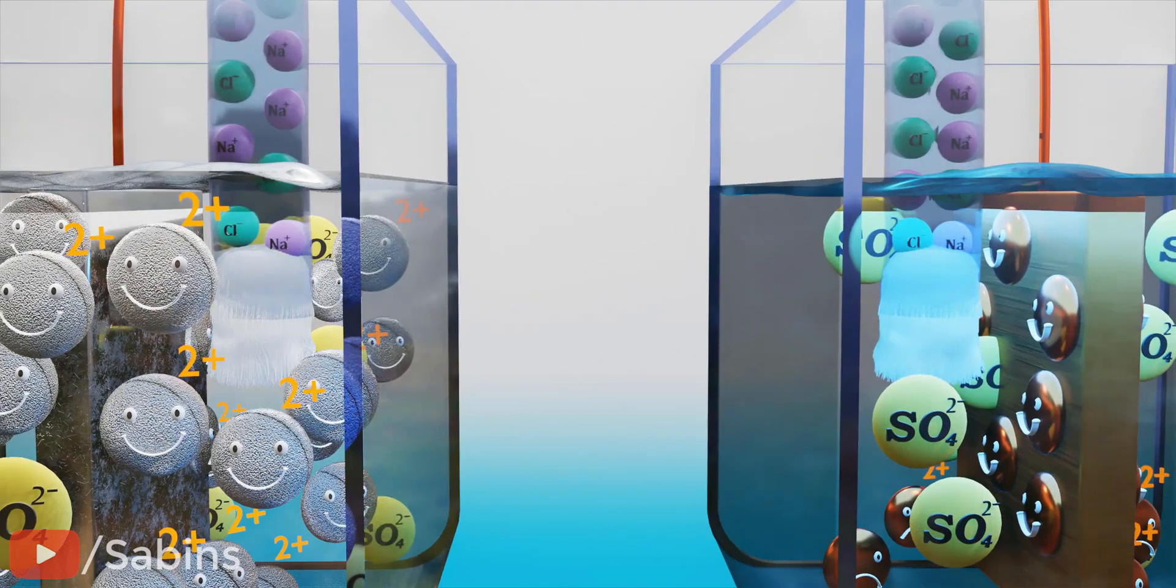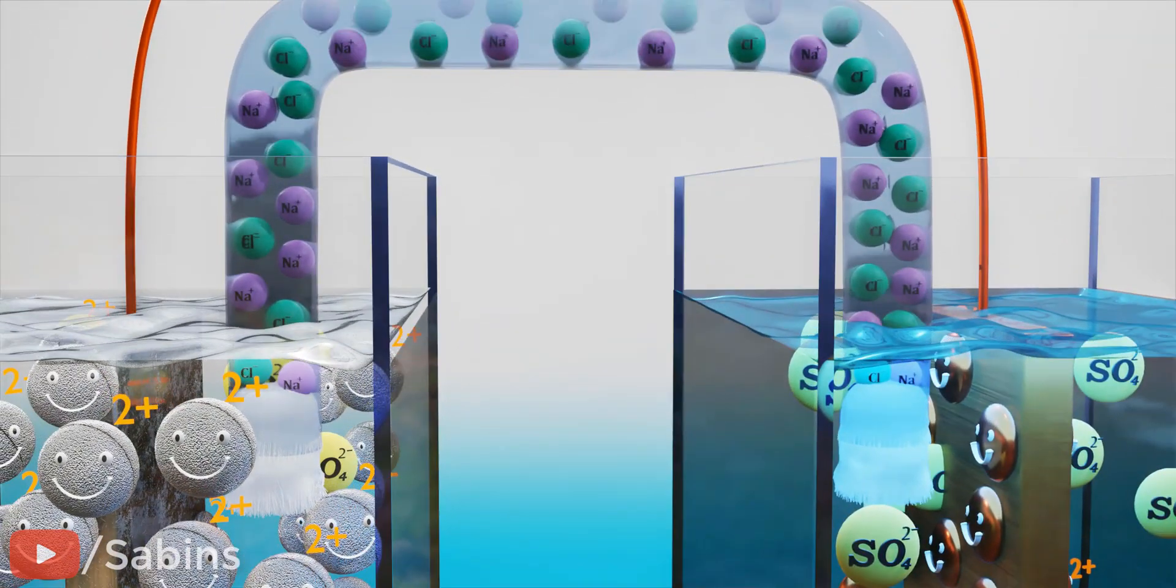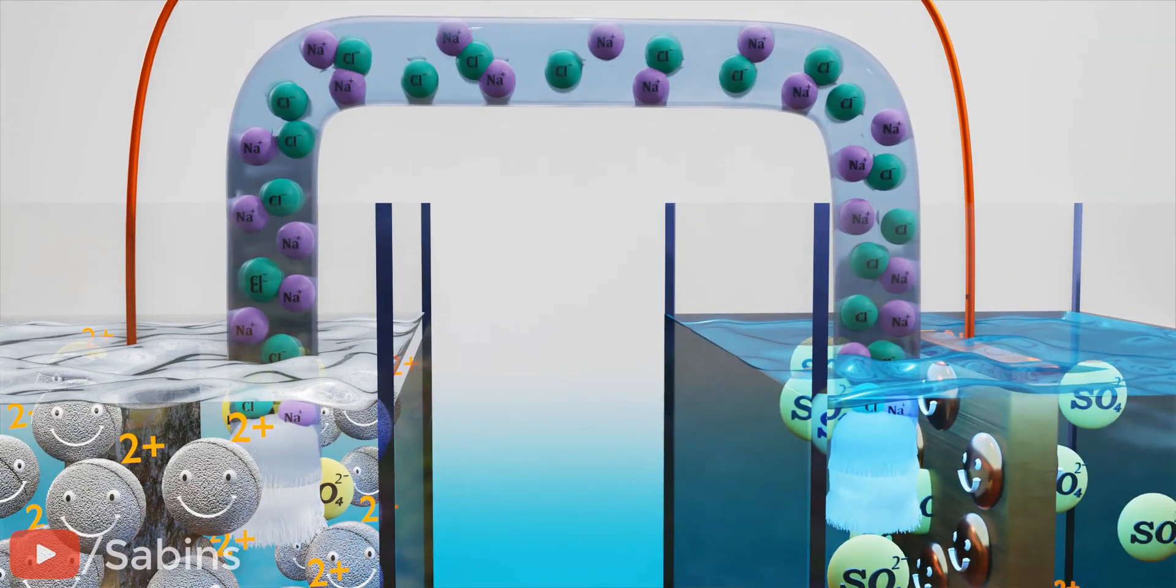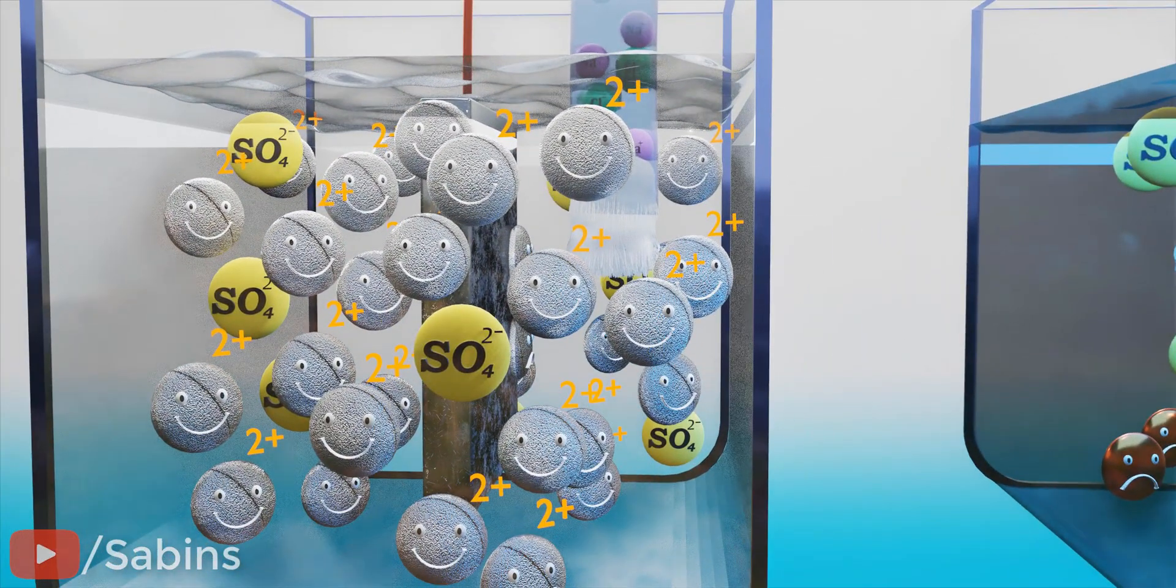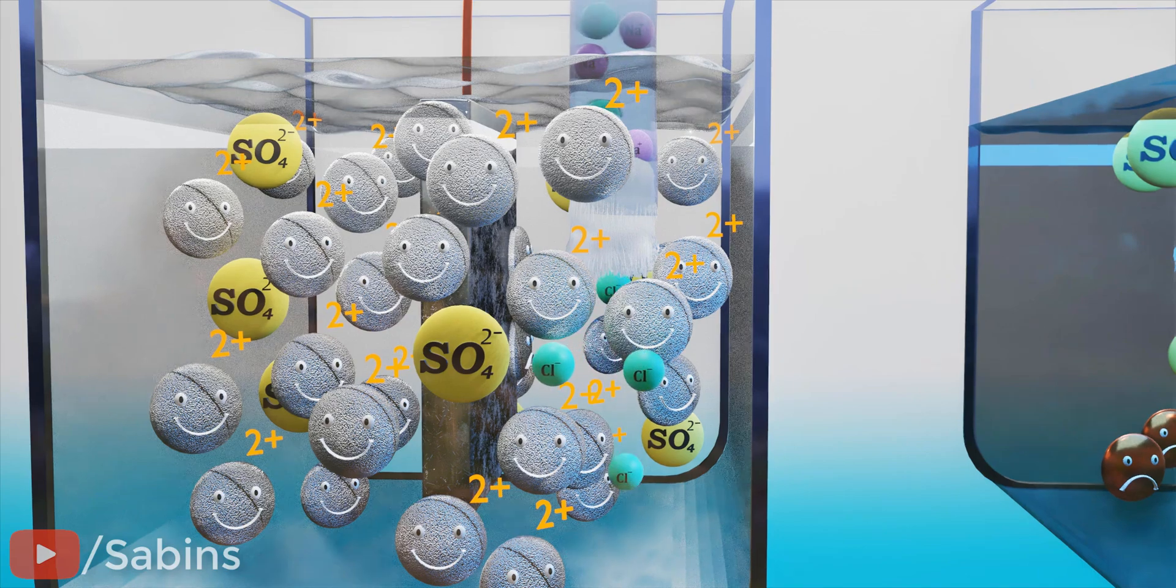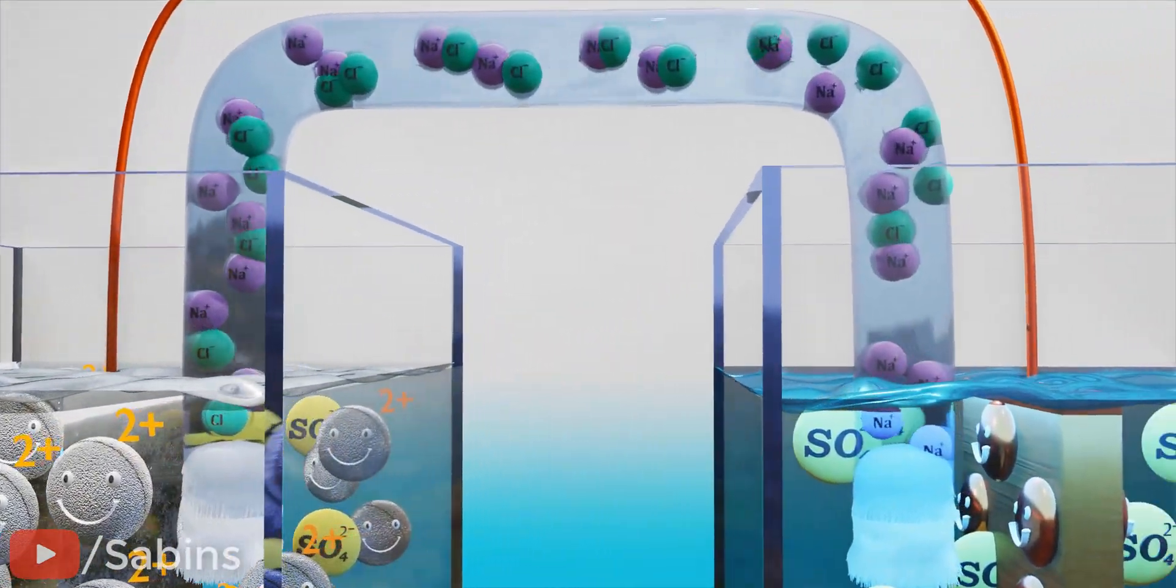What exactly happens when the salt bridge is introduced in between the chambers? The excess positive charges on the left side will obviously attract the negative ions inside the salt bridge. These ions will leak out and neutralize that region.